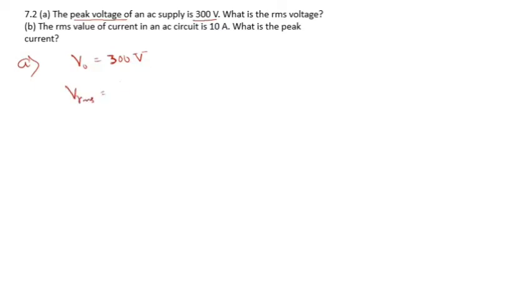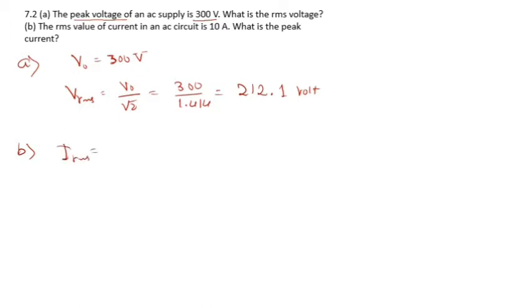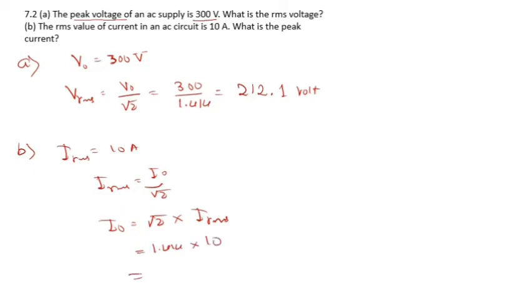Sub-question B: the RMS value of current in an AC circuit is 10 ampere; what is the peak current? Since I_RMS = I₀ / √2, we get I₀ = √2 × I_RMS = 1.414 × 10 = 14.14 ampere.